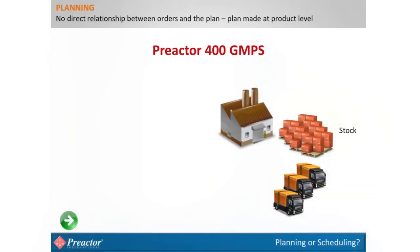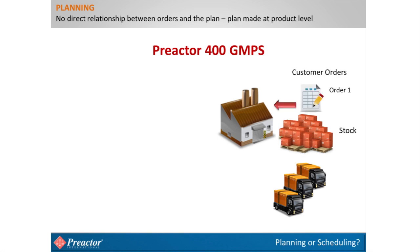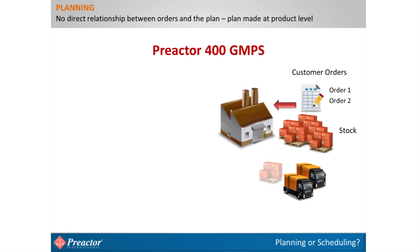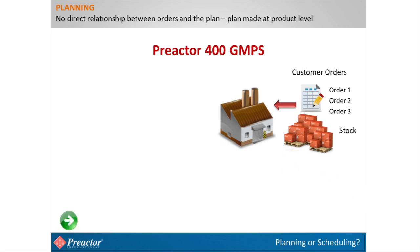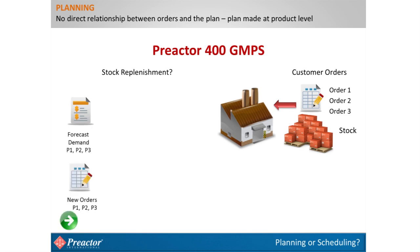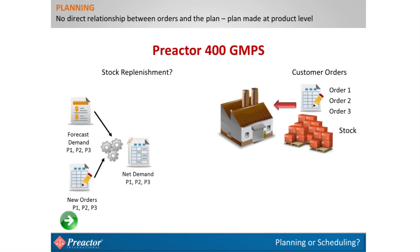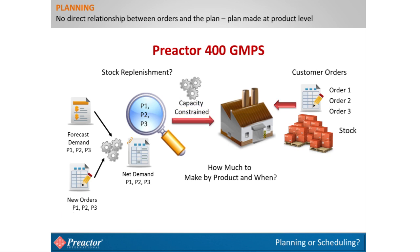The next two animated slides attempt to explain some of the differences between Preactor 400 GMPS (a planning system) and Preactor 400 APS (a scheduling system). In most planning systems, in a make-to-stock environment, there is no relationship between customer orders and the plan. As orders arrive, they consume stock. When a new plan is generated, it must consider expected future demand, orders yet to be fulfilled, and current stock position. Using defined rules for stock cover, the planning system works out how much of each product to make and when. If finite capacity constraints are used, the timing may be delayed, and making early may not be an option if shelf life is a factor.